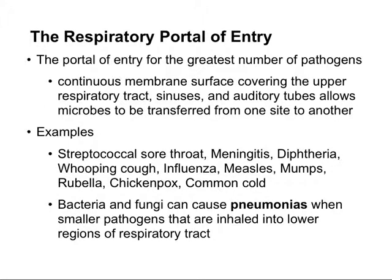Another membranous portal of entry is the respiratory system. This is where we see the greatest number of pathogens entering our bodies, because of the continuous membrane surface covering the upper respiratory tract, all of our sinuses, and the auditory tubes. Some examples include streptococcal sore throat, meningitis, diphtheria, whooping cough, influenza, measles, mumps, rubella, chicken pox, and the common cold. Sometimes particles are inhaled deeper into the lower respiratory tract, where certain bacteria and fungi can cause a variety of different pneumonias.